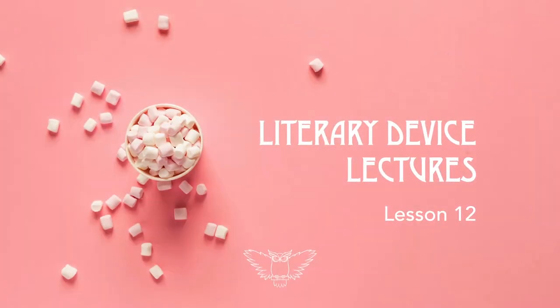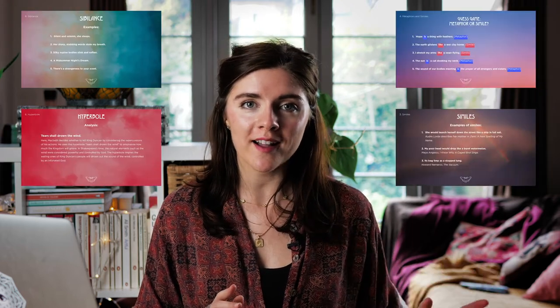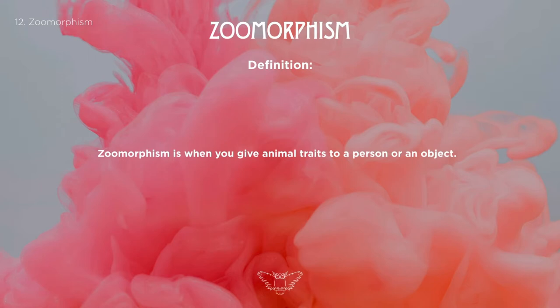The clue's in the name — zoomorphism. This is the final lesson, number 12 of 12 literary device lectures. This tutorial will cover the definition of zoomorphism, we'll look at some examples, and then I'm going to give you an exam-style analysis. Let's jump right into the definition: zoomorphism is when you give animal traits to a person or an object.